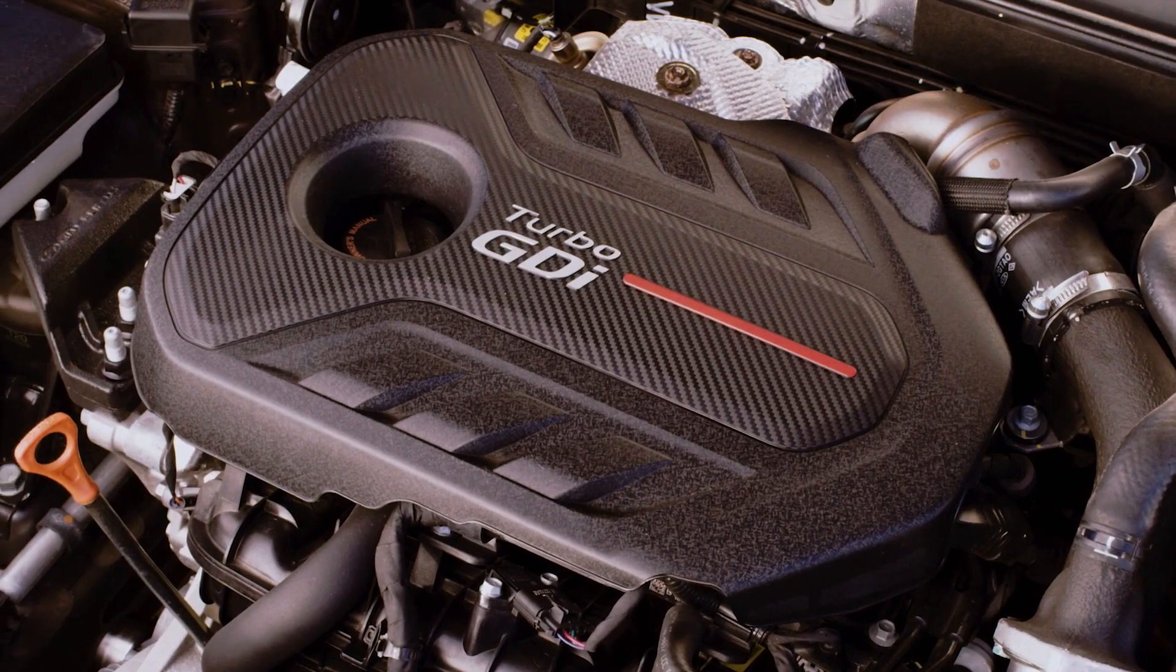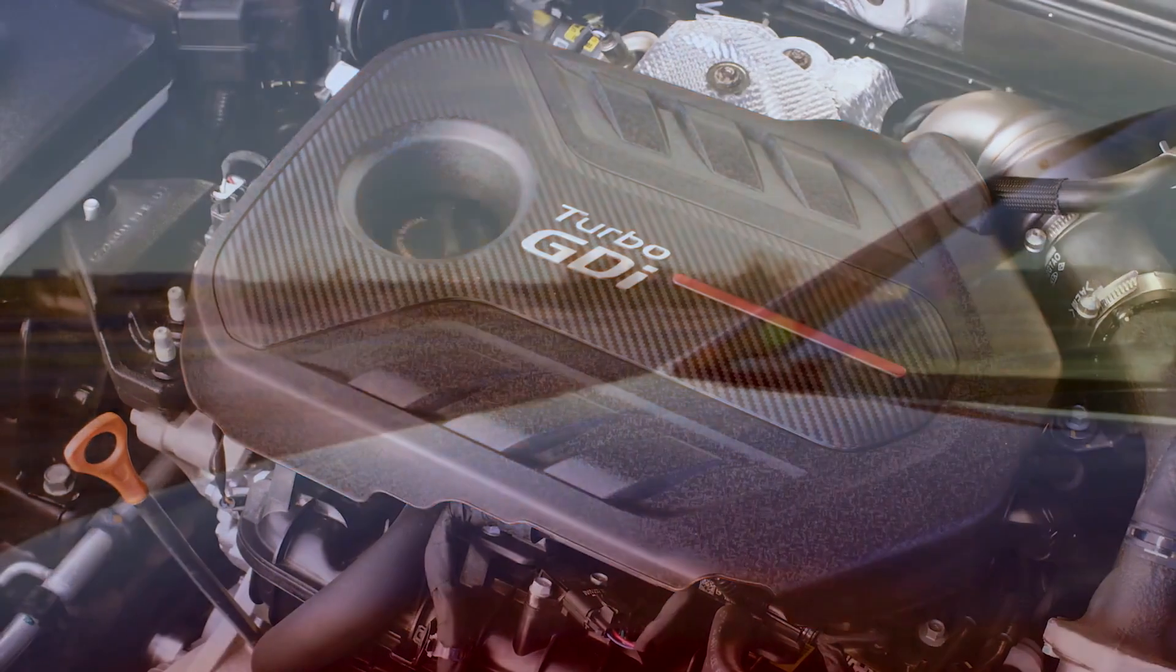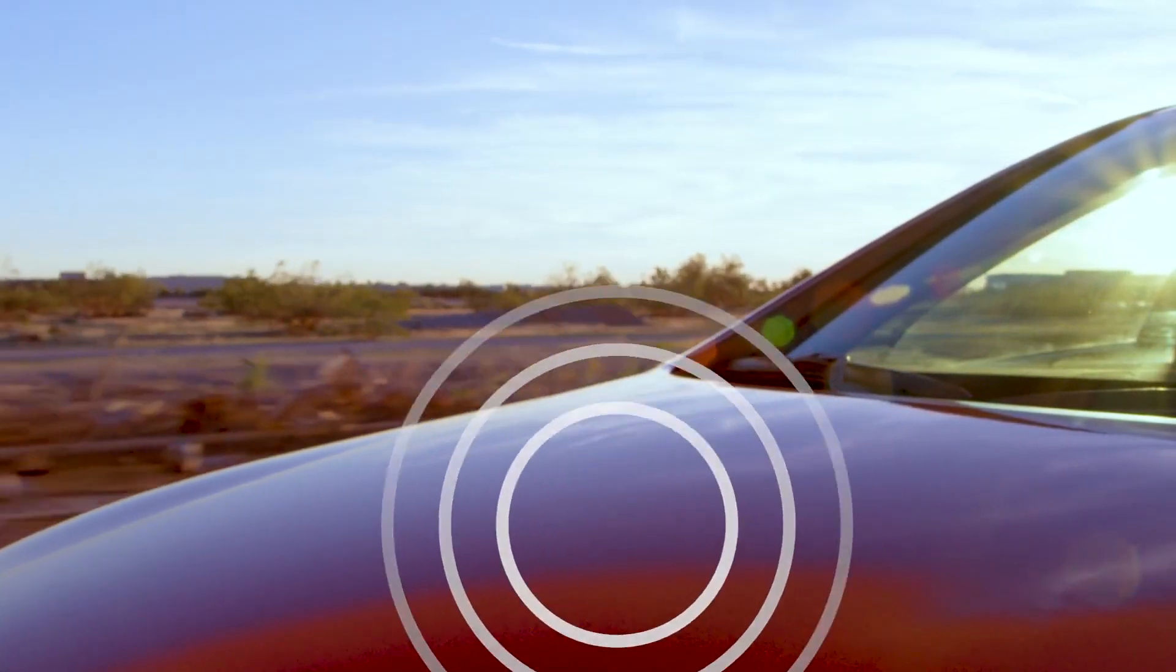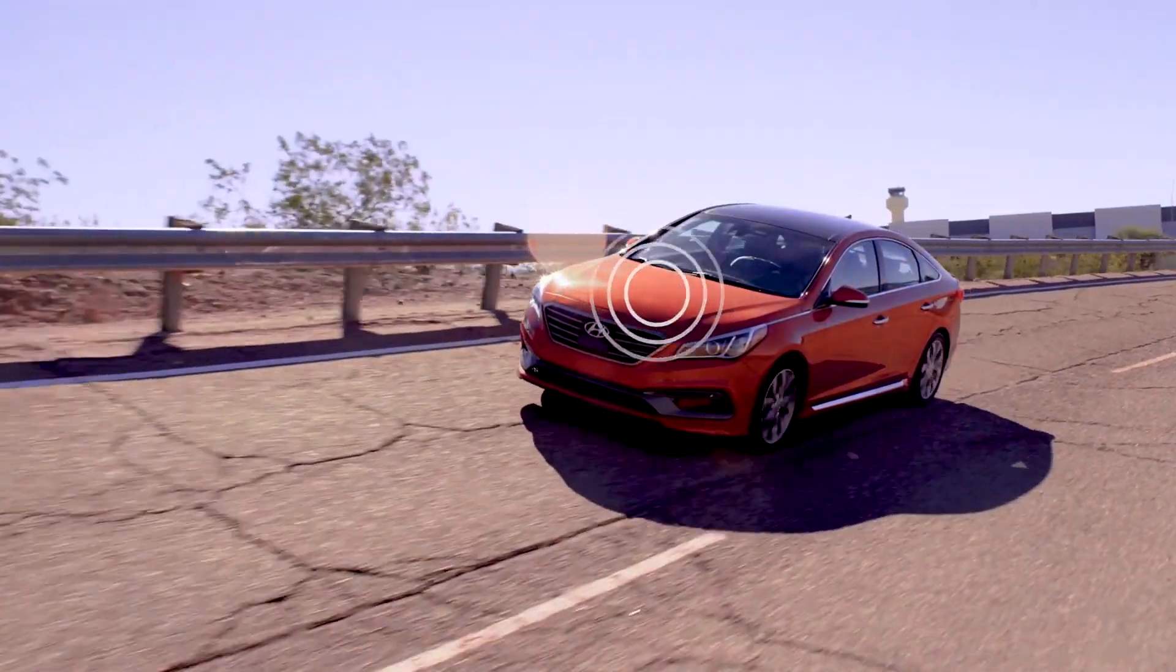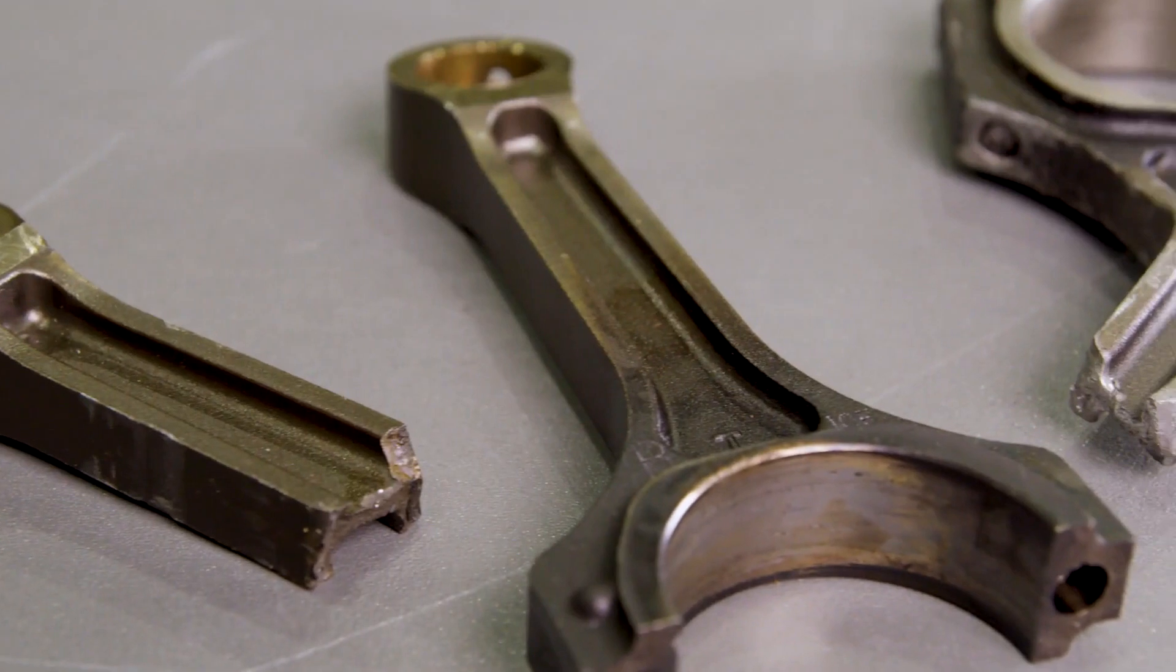The knock sensor detection system is located directly on the engine block and continuously measures engine vibrations. If the system identifies vibrations caused by an abnormally worn connecting rod bearing,